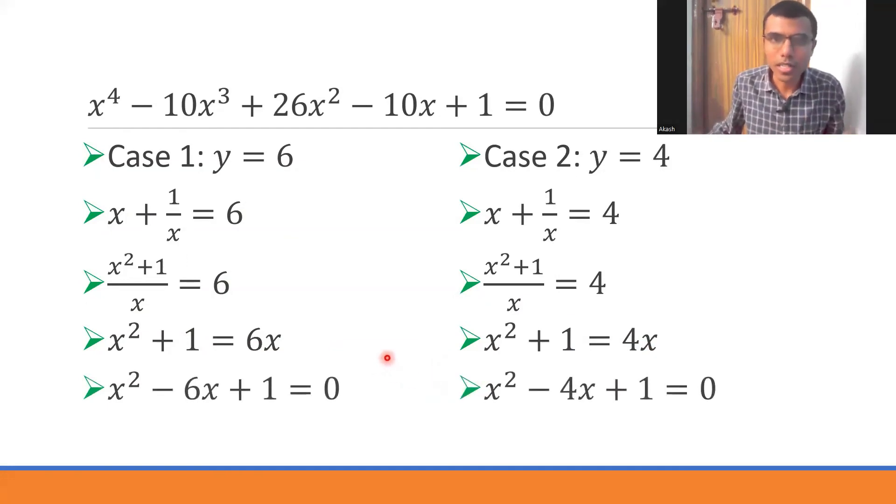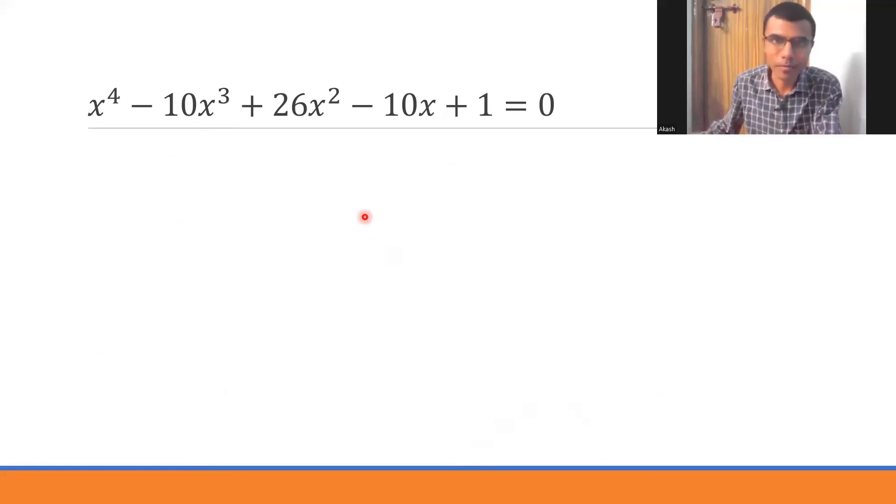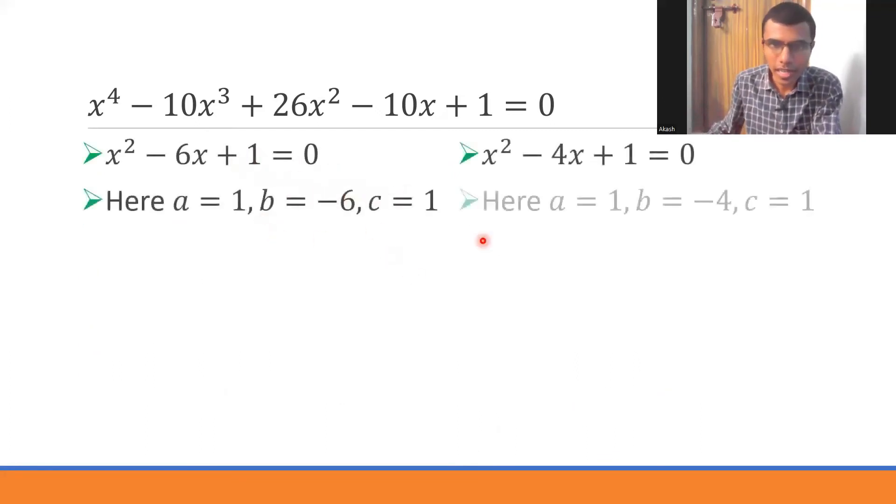Now to solve these two quadratic equations, again use a formula method. Here if you see a is 1, b is -6, c is 1. Here a is 1, b is -4 and c is 1.